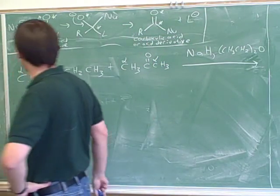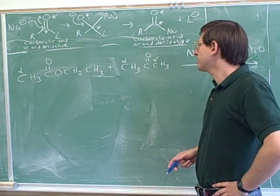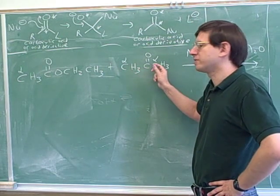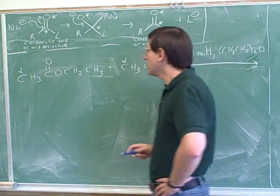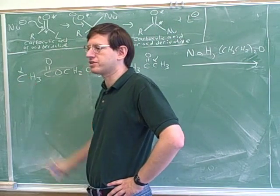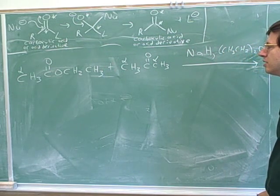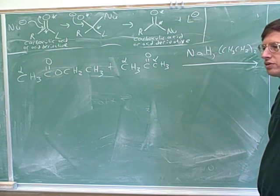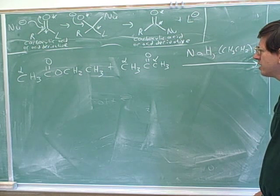One good thing to do is maybe start by labeling the alpha carbons. It doesn't matter whether it steals it from the left-hand alpha carbon or the right-hand alpha carbon, because they're equivalent, but we do have to decide, is it going to take it from the ketone alpha carbon or from the ester alpha carbon? Ketone is more acidic. That's right.